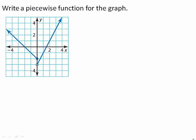Write a piecewise function for the graph. Each piece of the function is linear. When x is less than 0, the graph passes through the points negative 2, 0 and negative 3, 1.